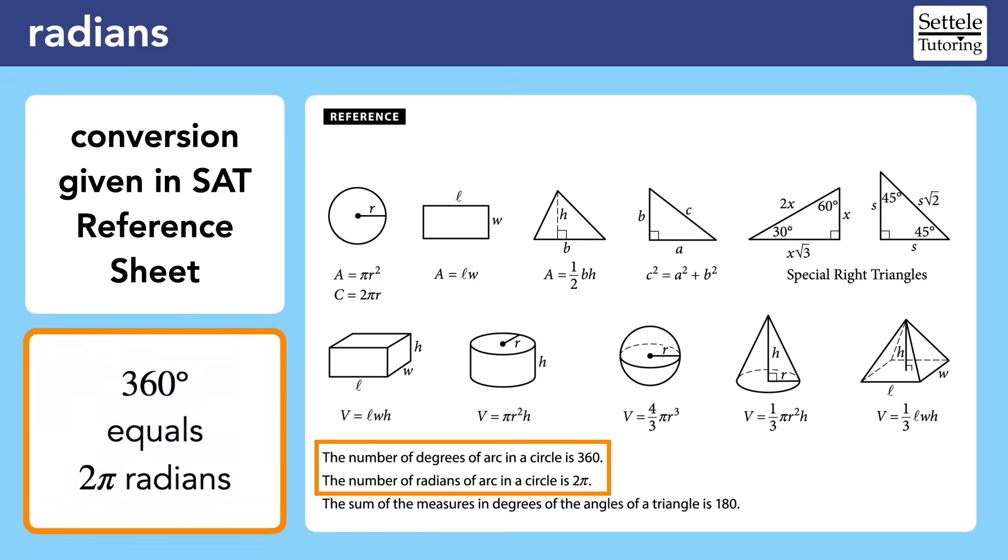In school, you might have had to memorize the unit circle, which includes the radian measures for a lot of different angles. You really don't need to remember all those angles for the SAT. This conversion and the Desmos calculator will give us everything we need.